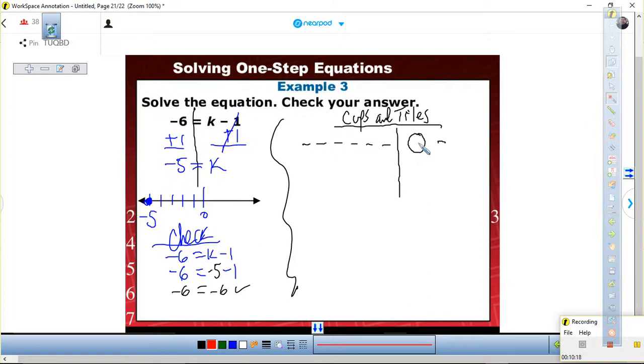Therefore, we need to leave the cup by itself to find out how many of these are going to fit in here. So we need to get rid of this negative. How do we get rid of that negative? Add a positive to make a zero pair here, and whatever we do to one side, we do to the other. Now that we're done with that, we go to step two. We bring this down. We're left with a cup. And how many negatives? One, two, three, four, five. Therefore, negative five equals K. Fairly simple?